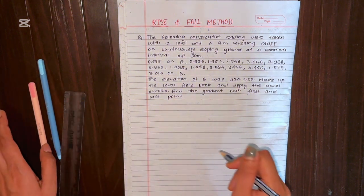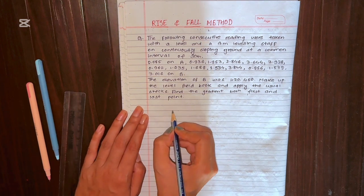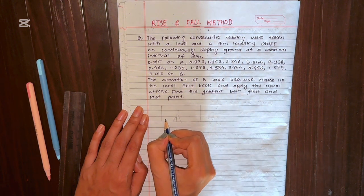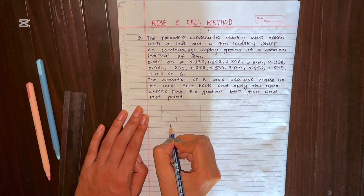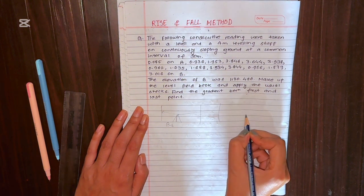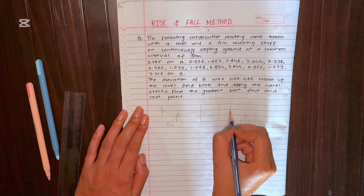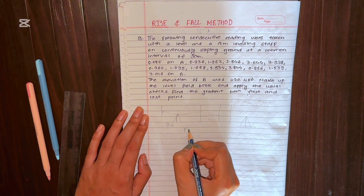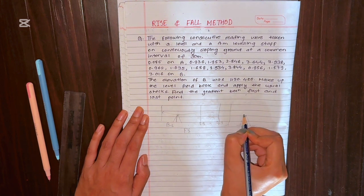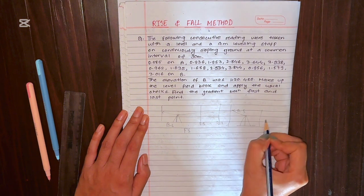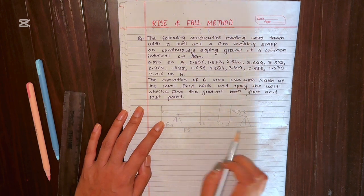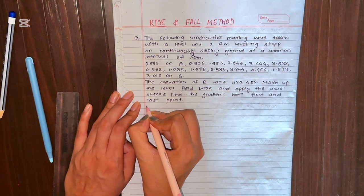In the rise and fall method, while doing leveling on the field, we keep the instrument — such as this auto level — and the staff readings are taken from it. The first staff reading taken is the backsight, then we calculate the intermediate sight. When we change the auto level, that will be the changing point, and the last reading from the previous position will be the foresight. After changing, the first reading is the new backsight, and again intermediate sights follow until the final foresight.